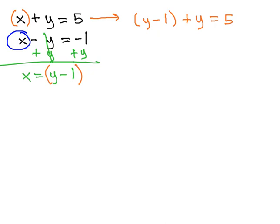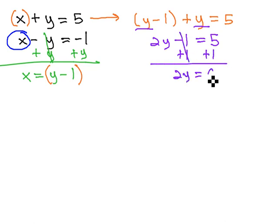And now we can solve the remaining equation quite quickly. There's nothing to distribute, so we'll jump to combining like terms. 2y minus one is five, add one, 2y equals six, divide by two, y equals three.